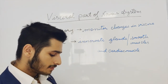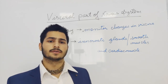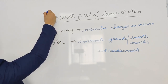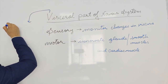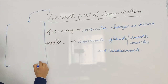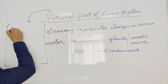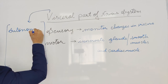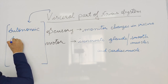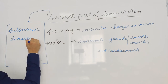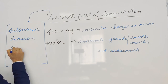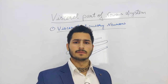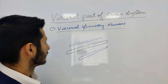This visceral part of the nervous system is also referred to as the autonomic part of the PNS. This visceral component is known as the autonomic division of the peripheral nervous system.